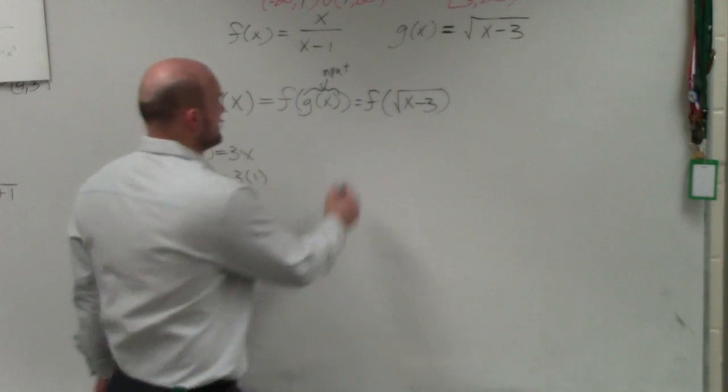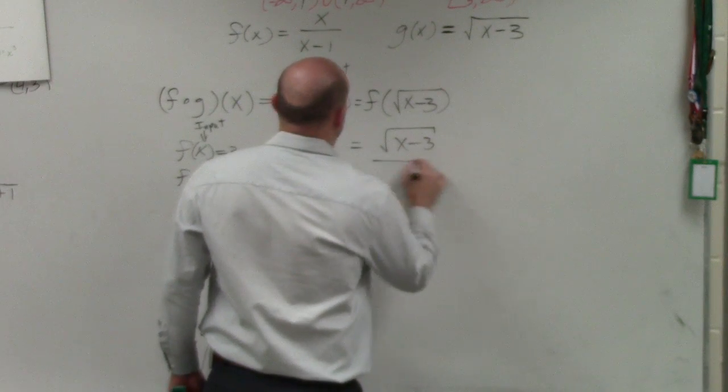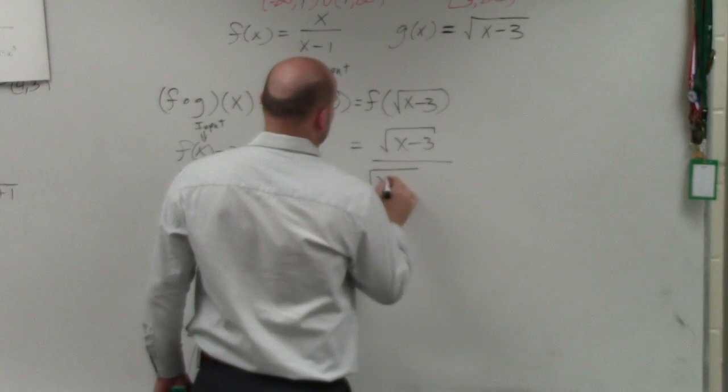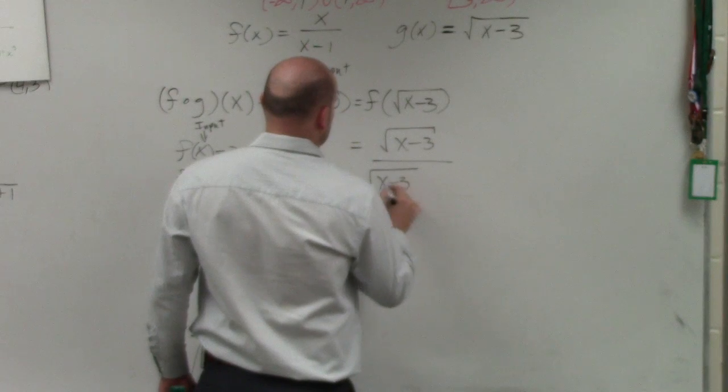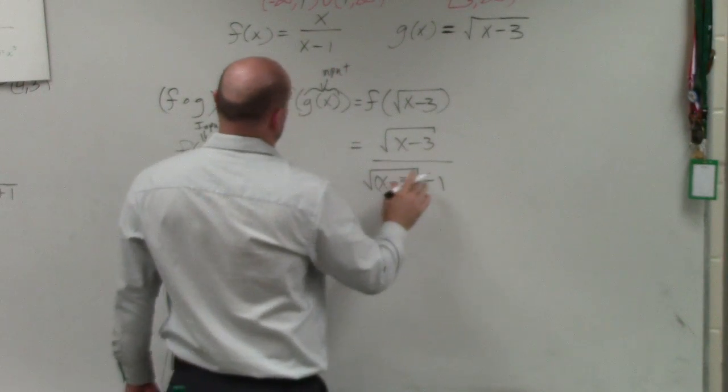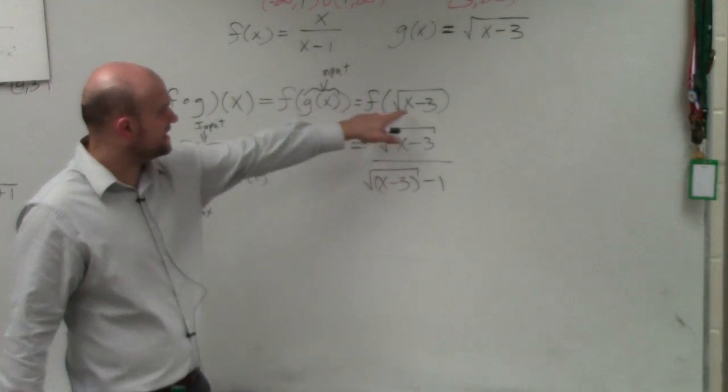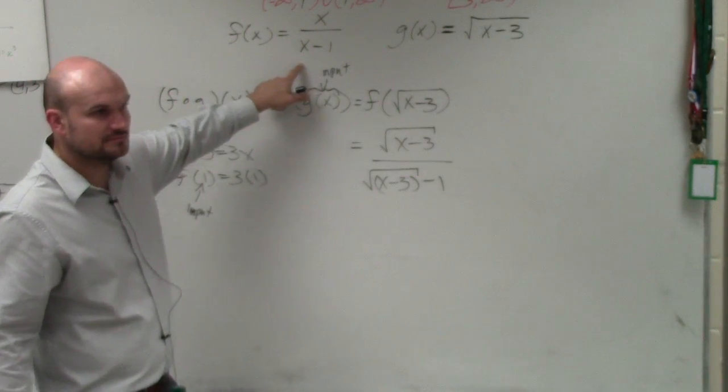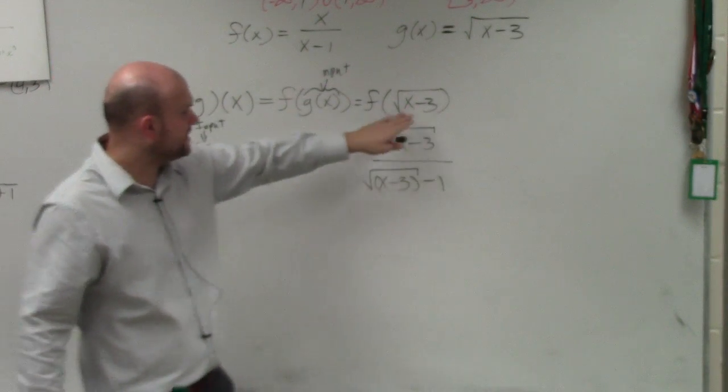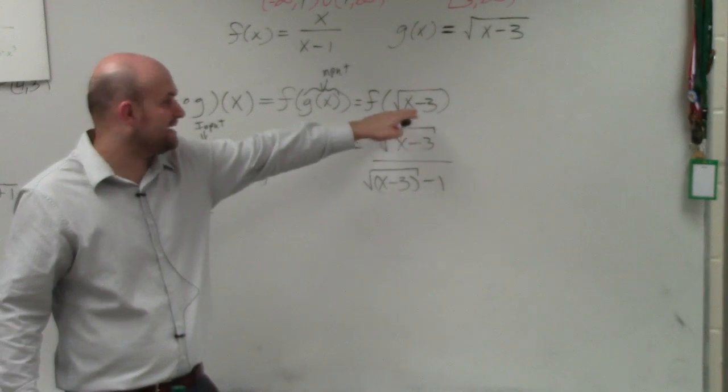Now, let's just plug that in for x. So I have square root of x minus 3 all over square root of x minus 3 minus 1. I just plug x minus 3 in for x. I'm just replacing x with square root of x minus 3, because that's my input.